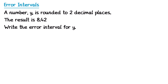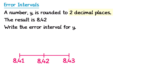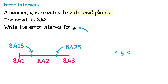The difference here is this one's been rounded to two decimal places, so when we do the number line we place 8.42 in the middle, but we need numbers that have two decimal places immediately below and above this: 8.41 and 8.43. Then we find the bounds halfway in between these — 8.415 and 8.425. Then we form the error interval. Notice this time it's a different letter, y. So we put y, then the inequality symbols, then the lower bound 8.415 and the upper bound 8.425.